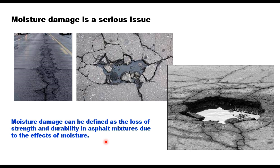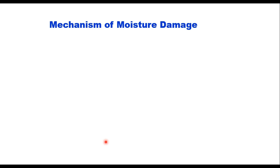To fully understand the moisture damage problems, it is important to address both the chemical factors and the mechanical factors responsible for moisture damage. The chemical factors affect the interaction of asphalt molecules with the aggregate surface and how the interaction changes in the presence of water. The physical issues are mainly concerned with ways to reduce the access of water to the asphalt-aggregate interface. There are several mechanisms which have been postulated to explain the moisture-induced damage in a pavement.